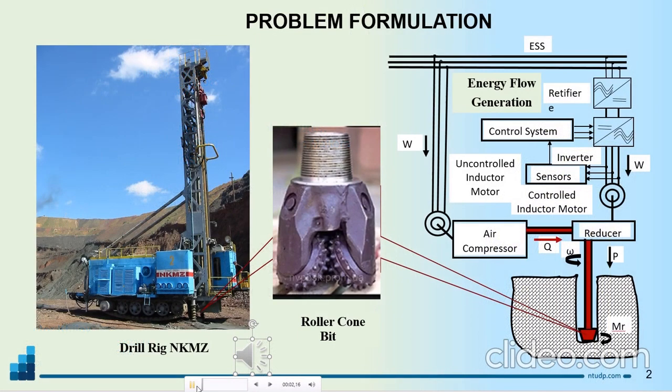A general view of the drilling rig manufactured by the Novo Kramatorsk machine building plant operated in the conditions of the central mining and processing plant is shown on the slide. It also presents a diagram of the formation and transformation of the flow of electromagnetic energy of the power supply system into a flow of mechanical energy on the cone of the roller. The roller cone bit is shown separately.